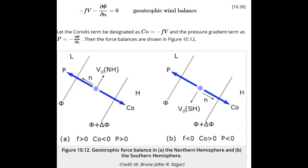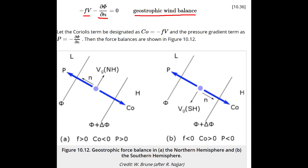Let's look at four force balances. We'll start with geostrophic balance, which occurs in straight-line flow in the free troposphere. In geostrophic flow, only the pressure gradient force and the Coriolis force are important. The pressure gradient points to low pressure on the height surface, or low height, and thus low geopotential on a constant pressure surface.